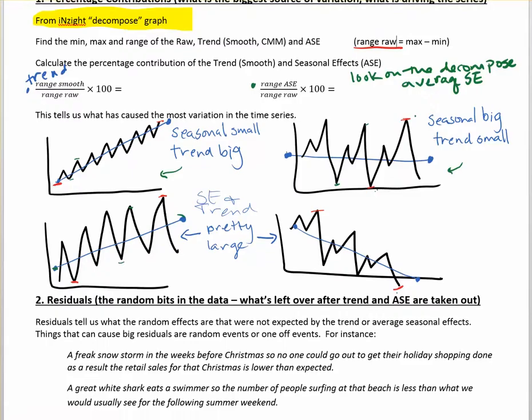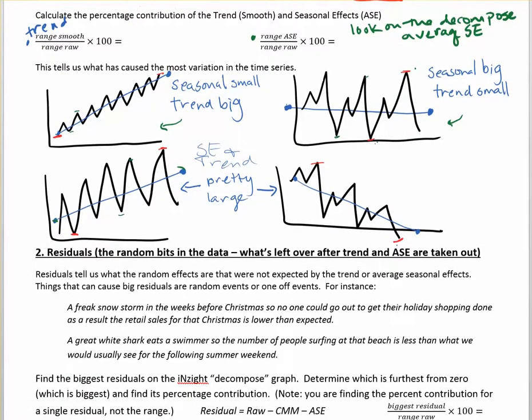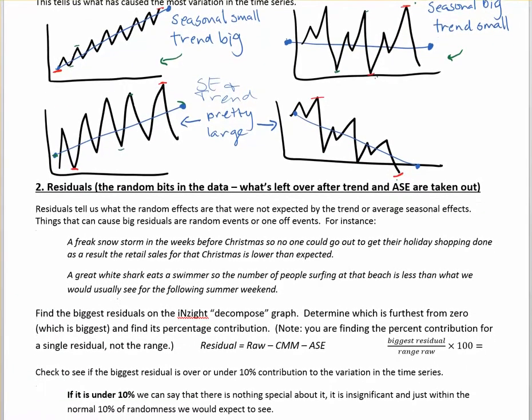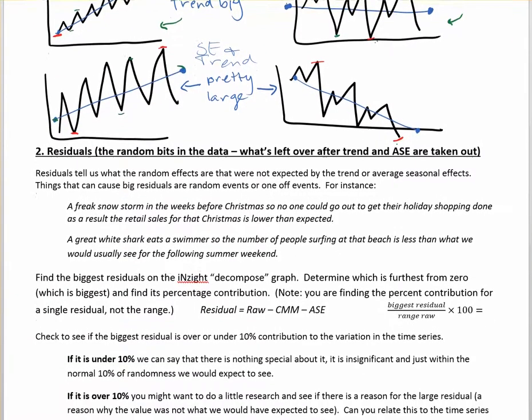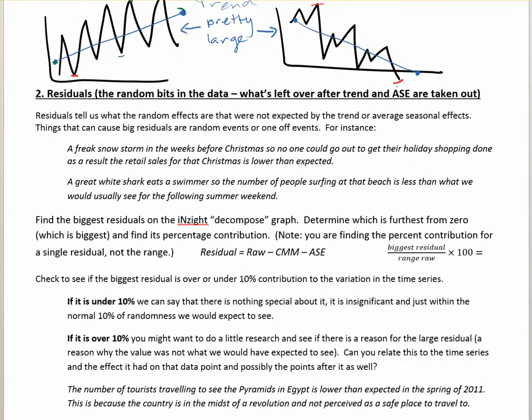So residuals, just to kind of, well, actually we're not going to talk about residuals too much, but they are going to come up in the decomposed graph, so I do want to talk about that. The residuals are what we call like our random noise. They're the things that come up randomly in the data. And this is going to show up in the decomposed graph as well. So we're going to talk about it. The residuals, the random bits of data in the data, and they're basically what's left over after you've taken the trend and the average seasonal effect out.